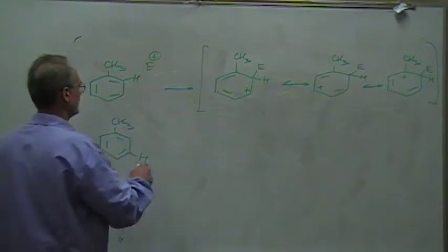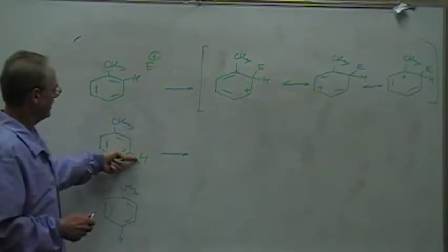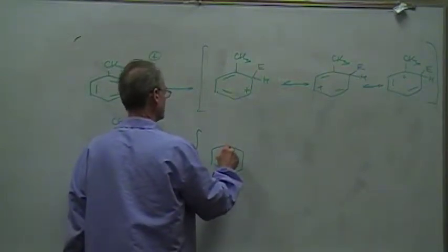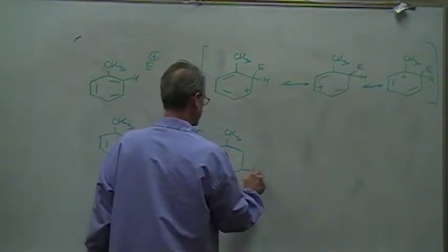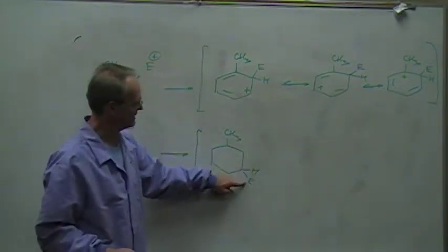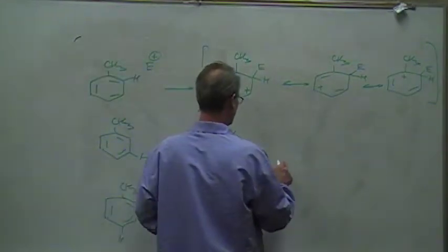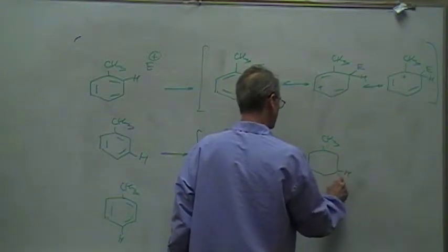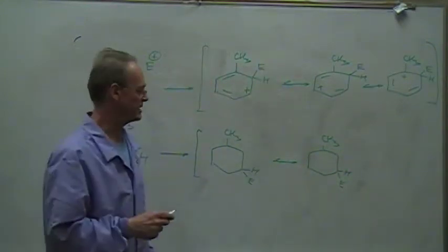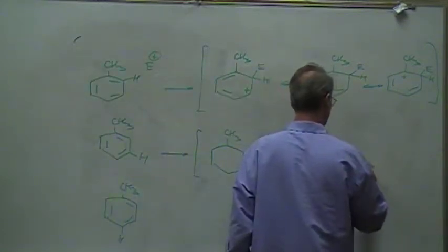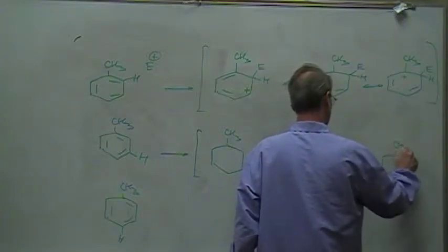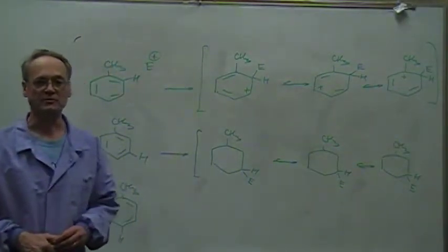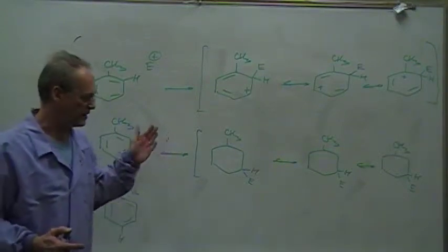We'll come back to that set of three in a minute, but let's do the same thing for attacking the meta position relative to where the methyl group is. I'm going to draw the skeleton three times. The methyl group has to be there, and in this case the electrophile has attacked at the meta position, so we draw the hydrogen and the electrophile both at that same carbon. The skeleton doesn't change — the carbons, hydrogens, and E group all stay in exactly the same location when we draw resonance structures. Draw the skeleton exactly the same three times, then put in the positive charges and double bonds.